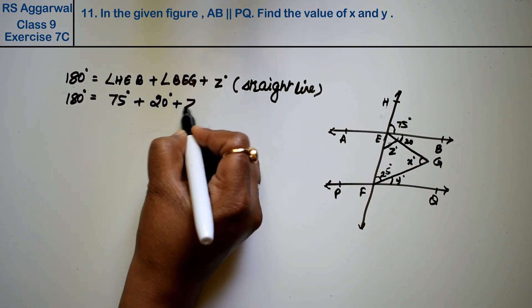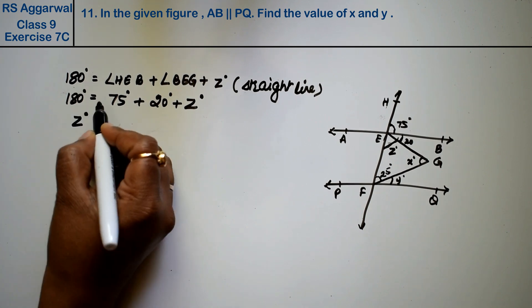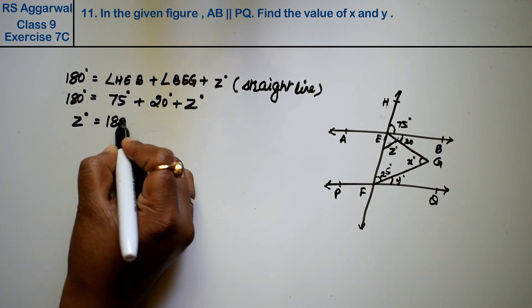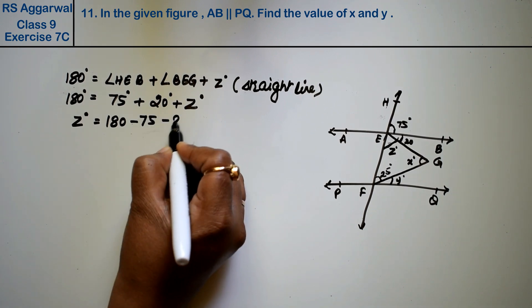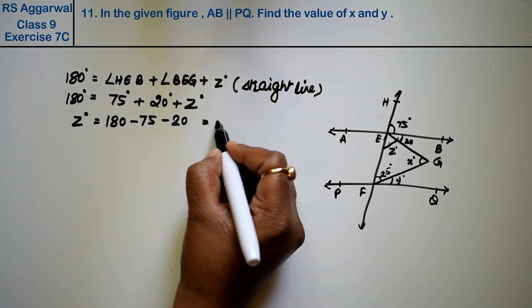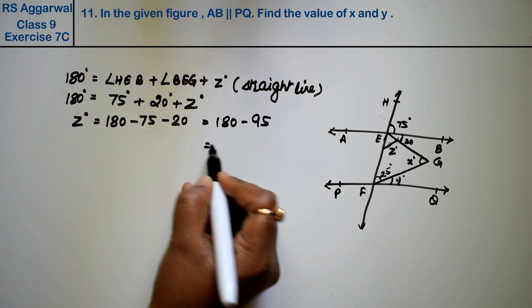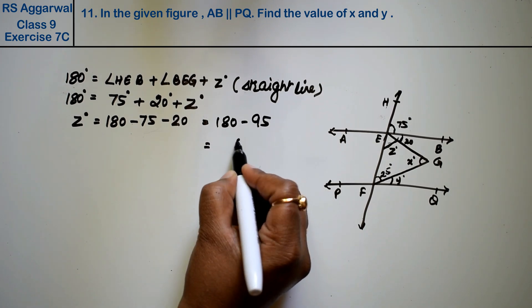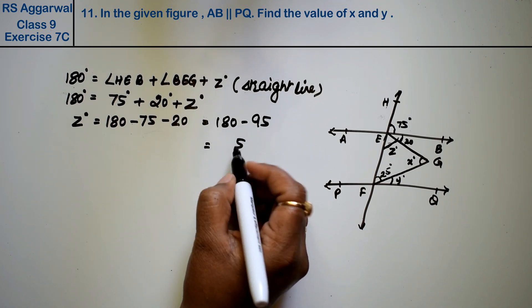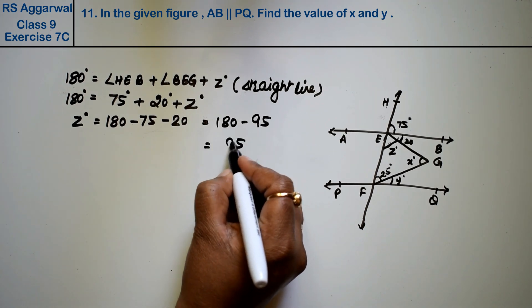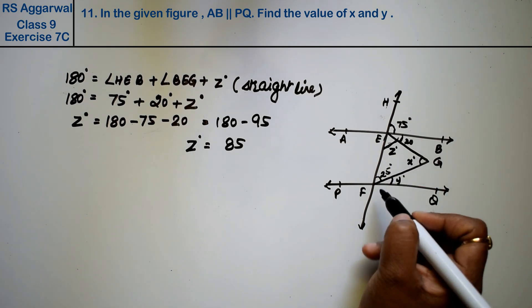So Z degree equals 180 minus 75 minus 20, which is 180 minus 95. That gives us Z equals 85 degrees.